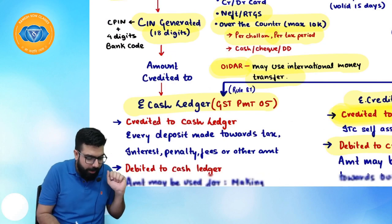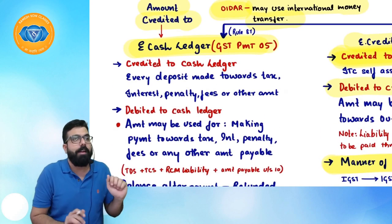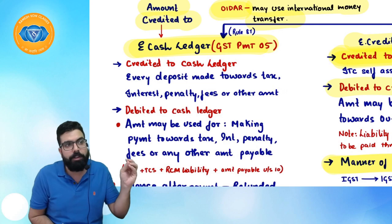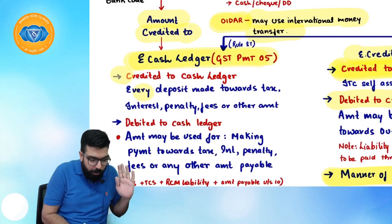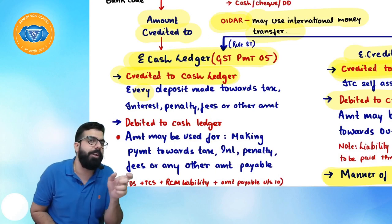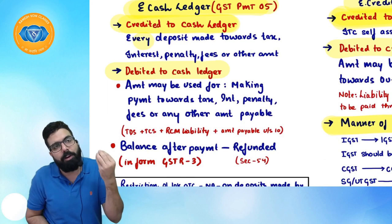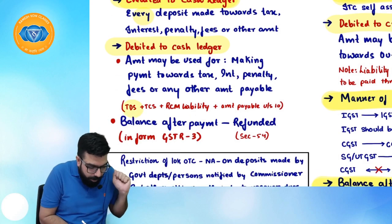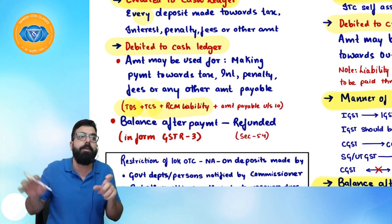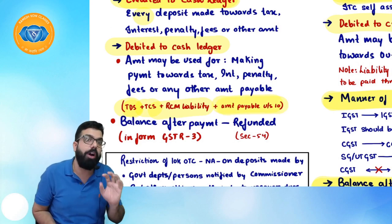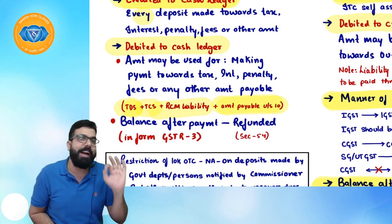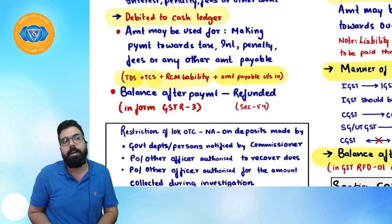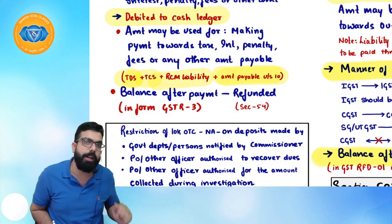OIDR will make payment using international money transfer. Once payment is made, the amount is deposited to the government account. The CPIN becomes CIN (Challan Identification Number) and the amount is credited to your e-cash ledger. Whatever you deposit — tax, interest, or late fee — is credited accordingly. The e-cash ledger can be used for payment of output tax liability, TDS liability, TCS liability, RCM liability, and composition tax.